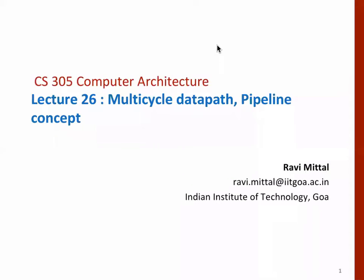Today we discuss multi-cycle data path design. So far we have completed a data path which completes instruction execution within one cycle. We designed the data path such that all five stages of an instruction complete within one cycle. The question is: why do we need a multi-cycle data path? It means that instruction execution will take more than one cycle. We'll end up designing a multi-cycle pipeline design.